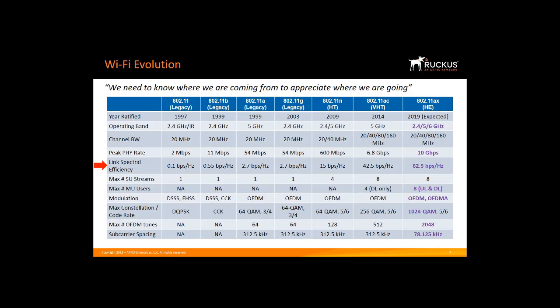This is what matters most. How often are we going to be in a situation where we really need 10 Gbps? The overall spectrum performance is also indicated by the name of the standard. 11n is called HT or high throughput. 11ac came along and was called VHT or very high throughput. 11ax is called HE for high efficiency. Efficiency is the big thing in the new standard.